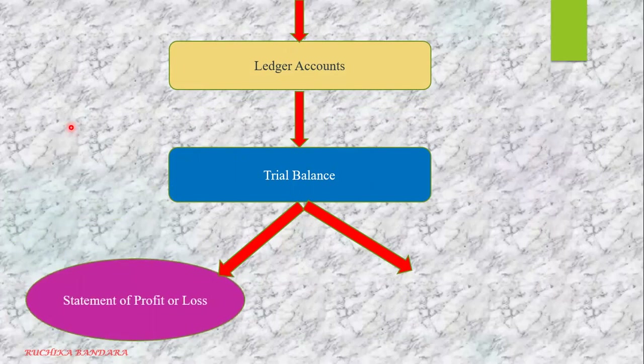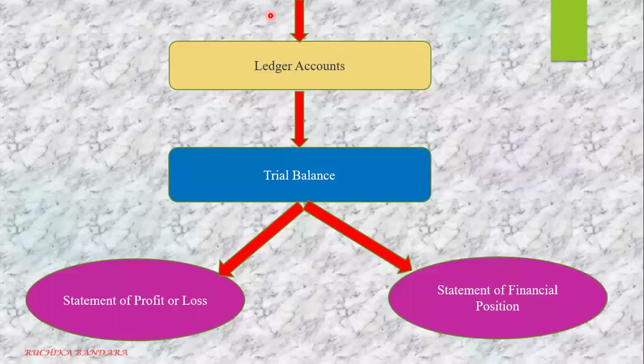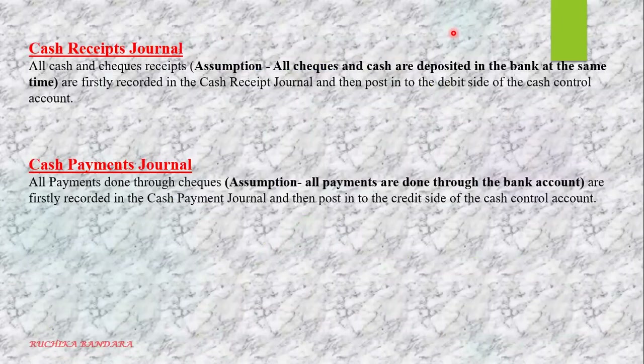The financial statements are the statement of profit or loss and the statement of financial position. That is the accounting process. Now I will explain the first two prime entry books — the cash receipt journal and the cash payment journal. When doing a business, you have to make two assumptions: first, whenever you receive money or checks, at that moment you go to the bank and deposit it. The second assumption is whenever you are making a payment, you are using checks. With those two assumptions, we make the cash receipt journal and the cash payment journal.